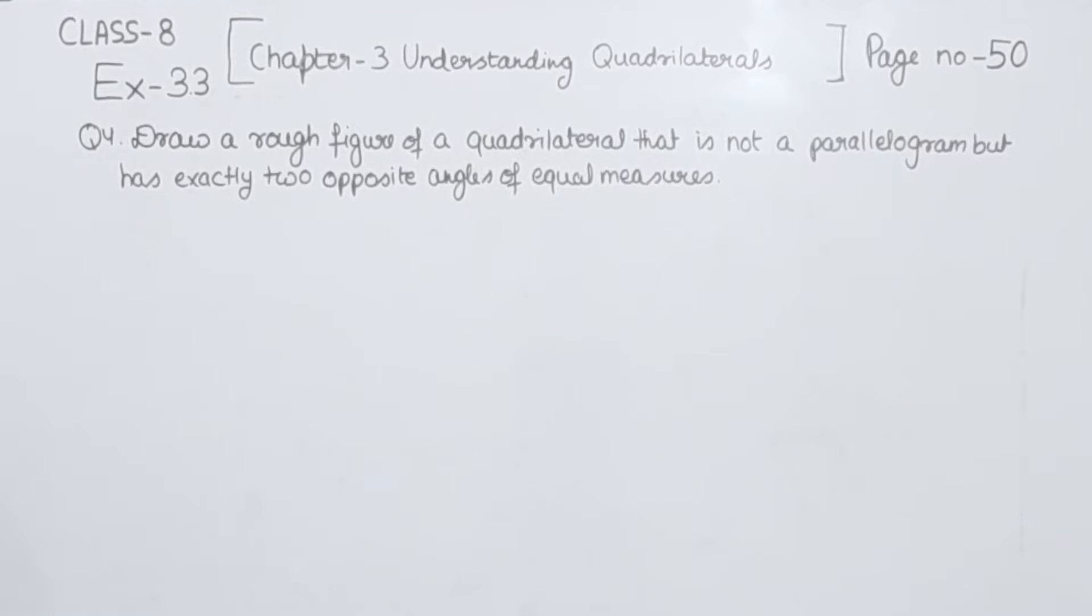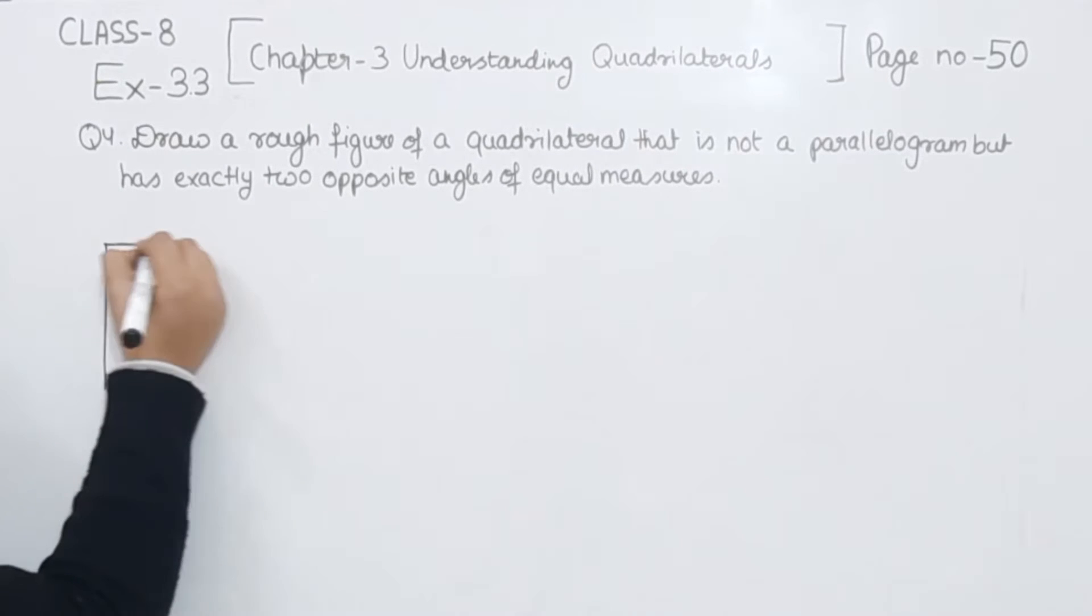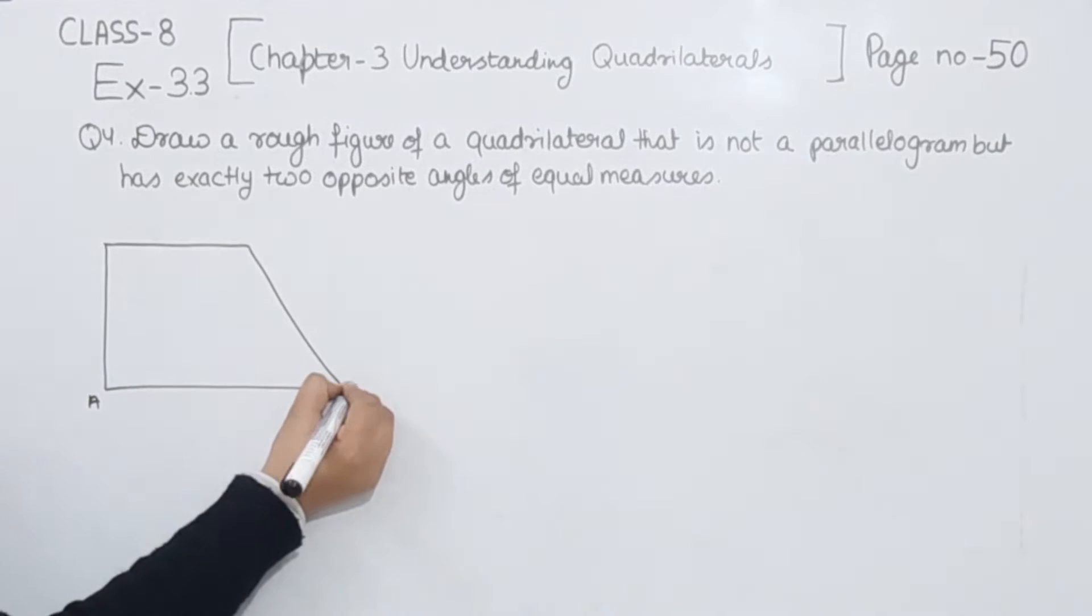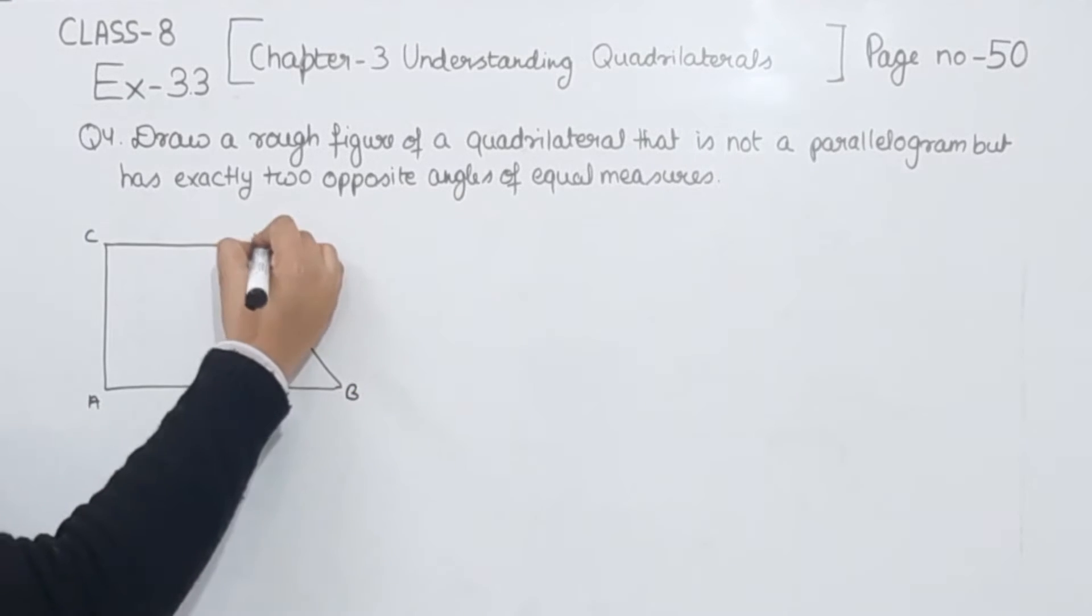So first of all, we have to draw the quadrilateral. I am going to draw this one. This is A, B, C, and D.